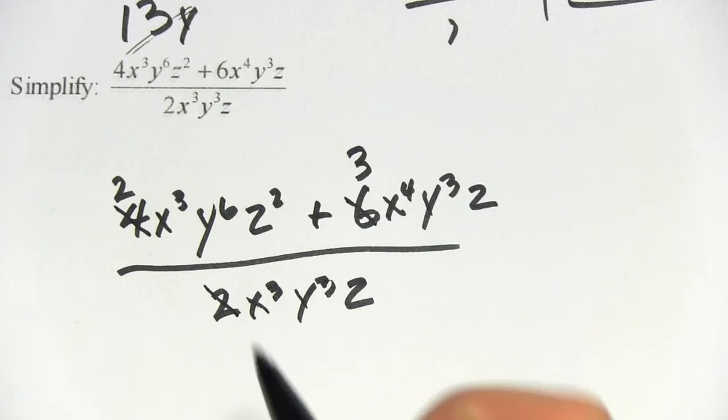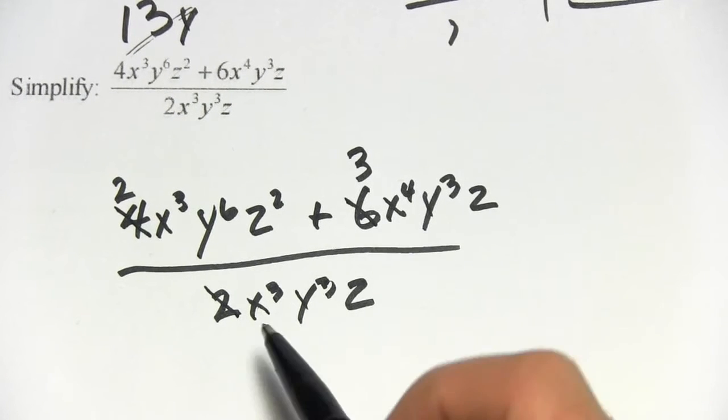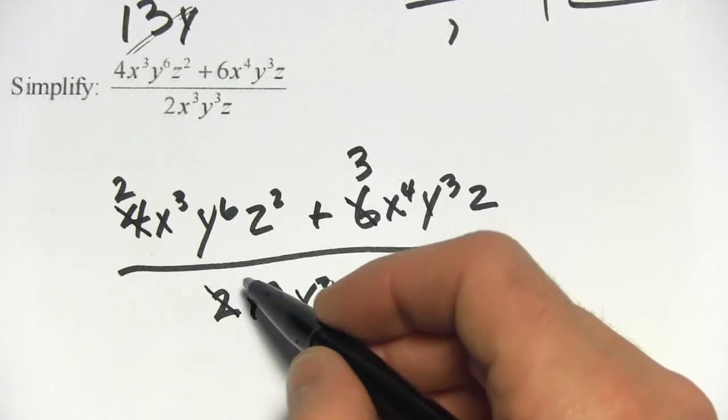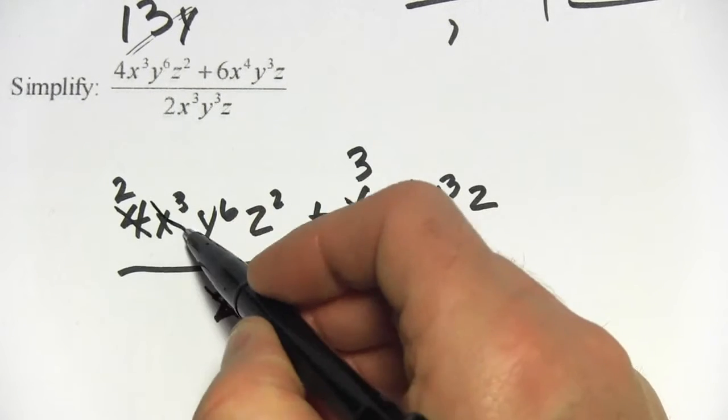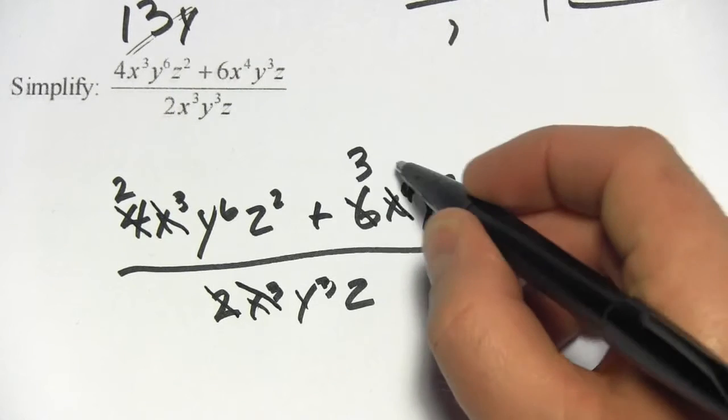Okay, so we've canceled the numbers, that left no number down there. Let's look at the x terms, so we have x to the 3rd, x to the 4th and an x to the 3rd down here. So we can cancel that whole thing there and this one, x to the 4th divided by x to the 3rd is just going to leave x.